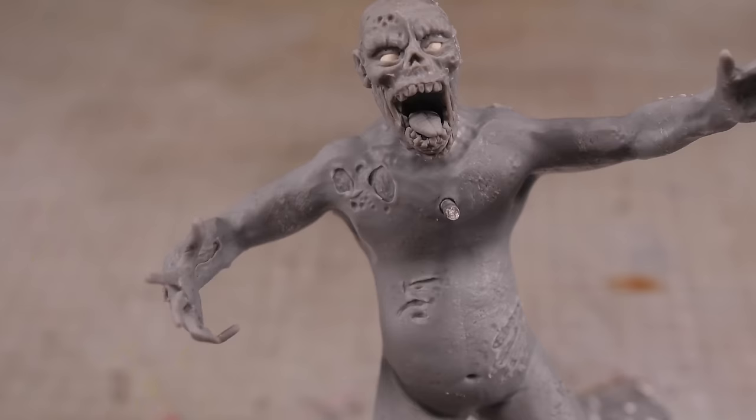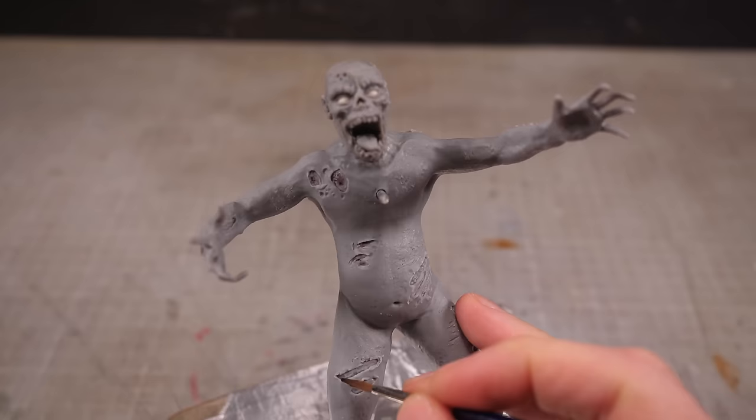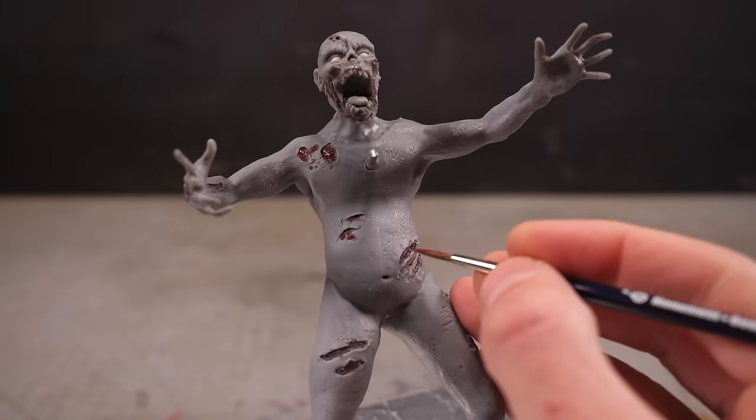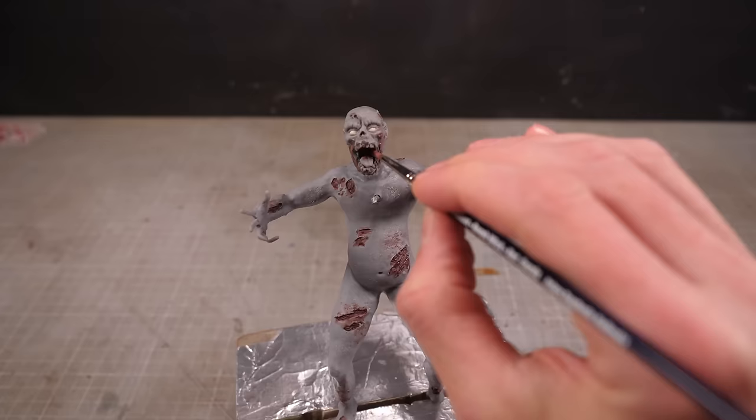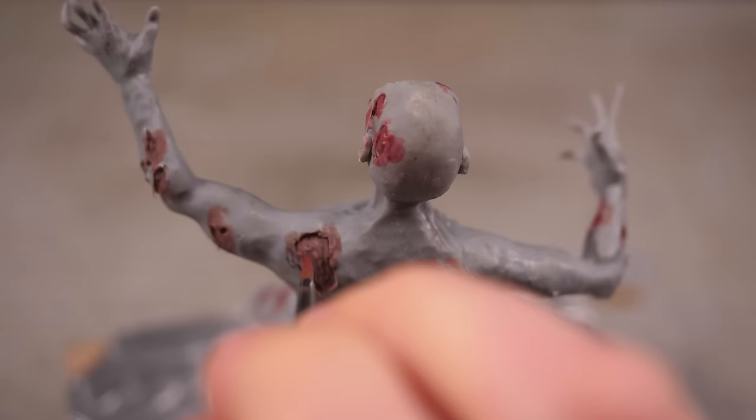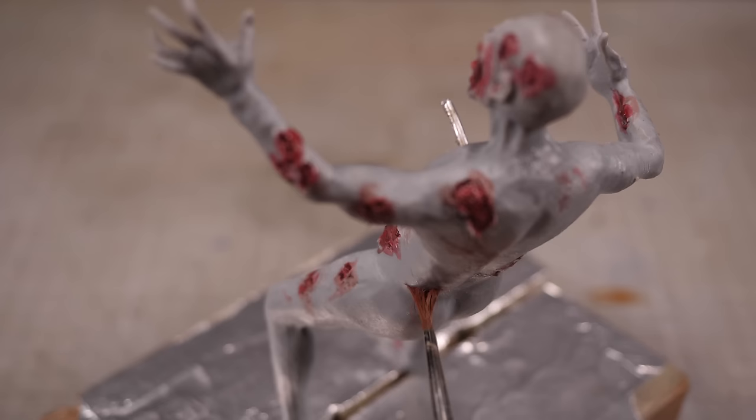Now before I add the clothes I want to paint his body since there's a lot of stuff that would otherwise be hard to reach. I'll start by adding some dark reds and terracottas to the open wounds then work my way up in progressively brighter tones until I've got a surface of bright red for the bloody bits.